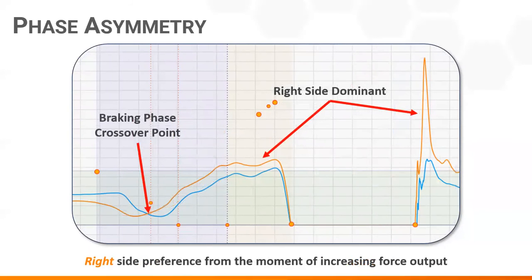Finally, we have this idea of the braking phase crossover point. So essentially, if you remember from previous episodes, the braking phase is when an individual starts to reverse the trend of downward force application and start to put force in the ground, tense up.